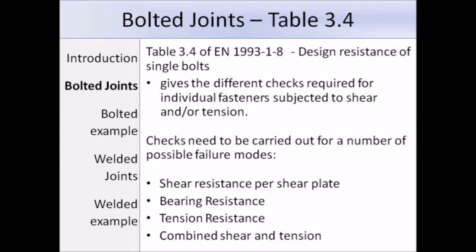We are talking about bolted connections, and in particular Table 3.4 of EN 1993 Part 1-8, which is concerned with the design resistance of single bolts. Table 3.4 gives the different checks required for individual fasteners subjected to shear and/or tension. Checks need to be carried out for a number of possible failure modes: shear resistance per shear plane, bearing resistance, tension resistance, and combined shear and tension. I will run through a summary of the main checks from Table 3.4; note there is also a punching shear resistance check in the table but I will not discuss it in this lecture.